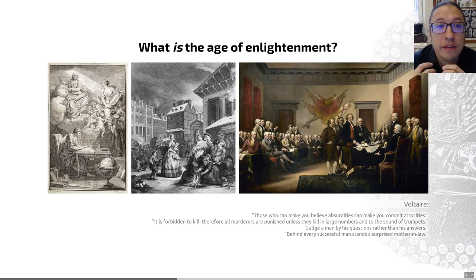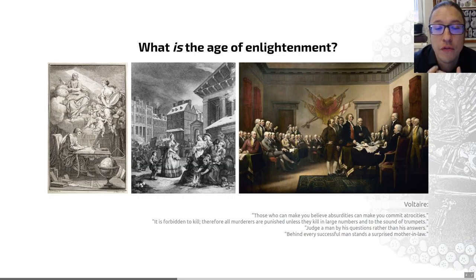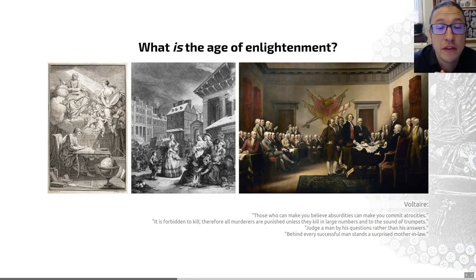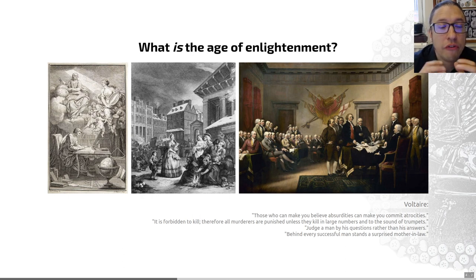It's this movement where a lot of the way that we do science developed over this period. An obvious example of that is the Royal Society, the learned society that still runs today, based in London, which was the first real vehicle by which journals were used to disseminate science.